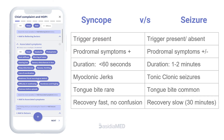A seizure may often be confused with syncope. An episode of syncope is usually triggered by intense emotions, illness, or pain. It is associated with prodromal features such as fainting, nausea, tinnitus, and blurry vision. An episode may last about 60 seconds; convulsions, if present, are in the form of brief myoclonic jerks, and the patient recovers quickly.